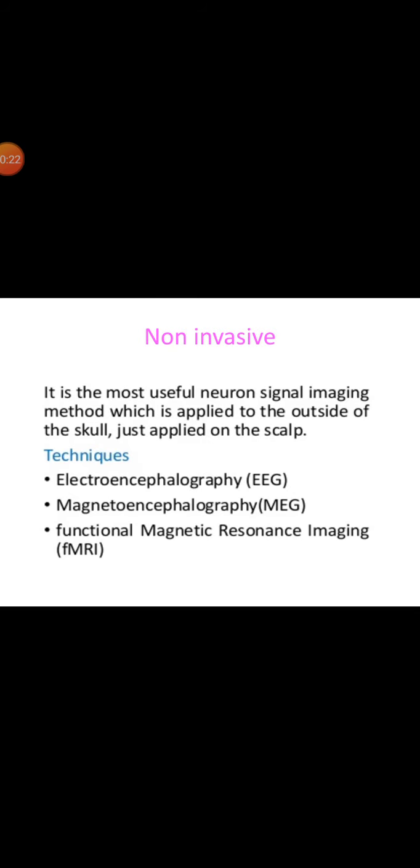The last method is non-invasive method. It is the most useful neuron signal imaging method which is applied to the outside of the skull. The techniques used to involve the non-invasive methods are EEG, MEG and FMRI, that is functional magnetic resonance imaging.